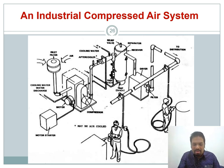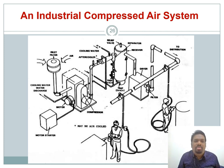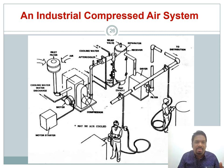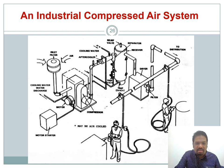I hope you understood the functions of all the elements in a basic pneumatic system. We covered the compressor, receiver, dryer, and FRL unit — all of which are conditioning elements that prepare the compressed air. Please repeat this video if you need to review. Try to answer the questions provided. Thank you.